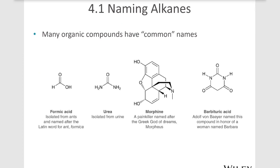Traditionally, many organic compounds have been given common names — some because they were discovered before the actual molecular formulas were able to be deduced, and some because they're so complex it would be very difficult to name them with IUPAC nomenclature. IUPAC stands for International Union of Pure and Applied Chemists, and that's the term we use for systematic nomenclature methods.